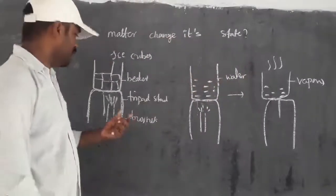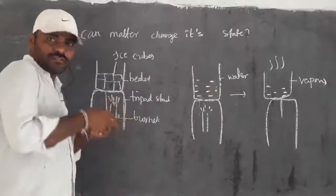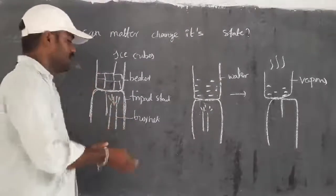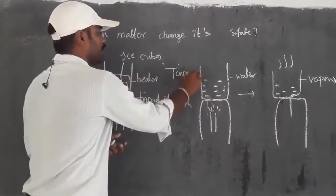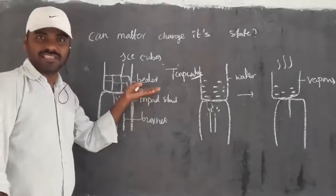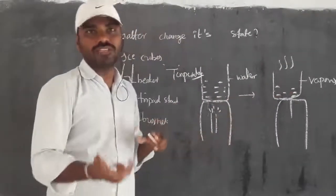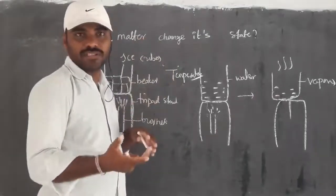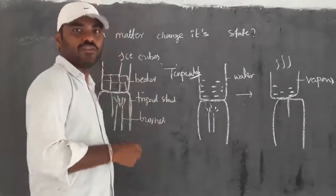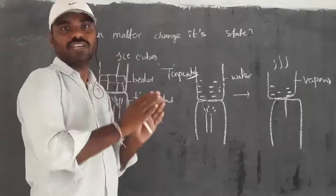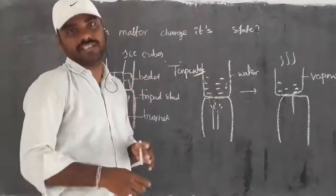From this, what you understood is simply we gave a certain amount of heat with the gas burner. Then from that flame, it is able to receive heat energy. Ultimately, on receiving of heat energy by ice cubes, it can raise the temperature. So temperature is increased, and on increasing of temperature, water changes into vapor.